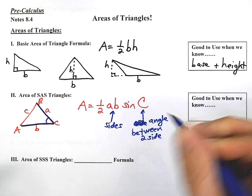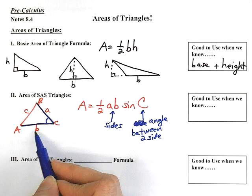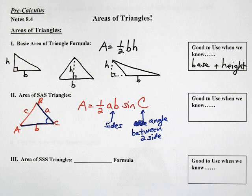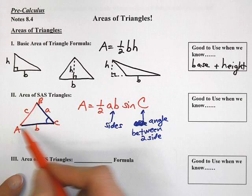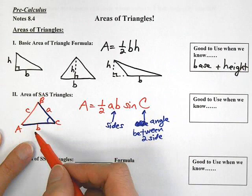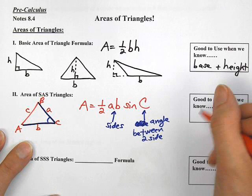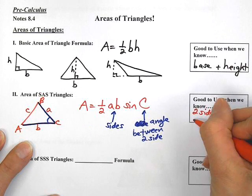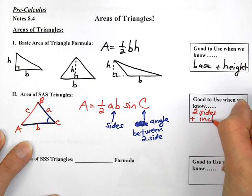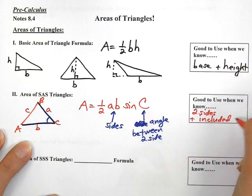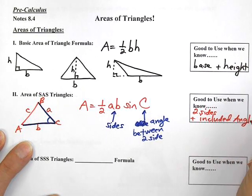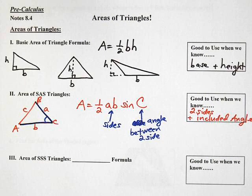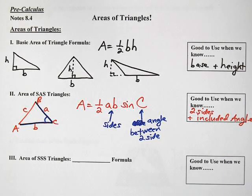And if you have side, angle, side, this is a great formula to use. It does not have to be a right triangle. You don't have to know the base or the height, you just have to know side, angle, side. This is a great formula to use if we know two sides and the included angle. And what does included angle mean? It means the angle between them.